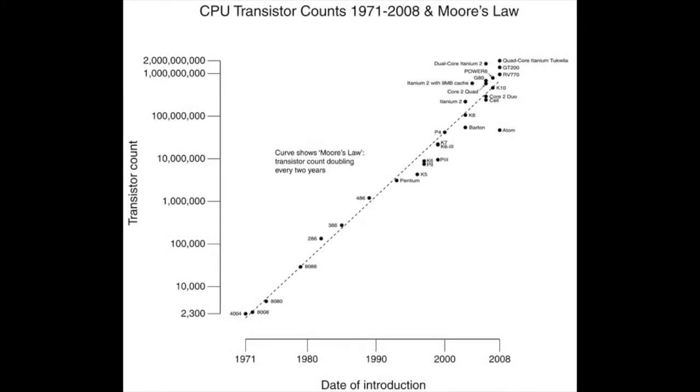Moore's Law is the technological theory that the number of transistors in a circuit will double every two years, but eventually are bound by atomic level limitations.